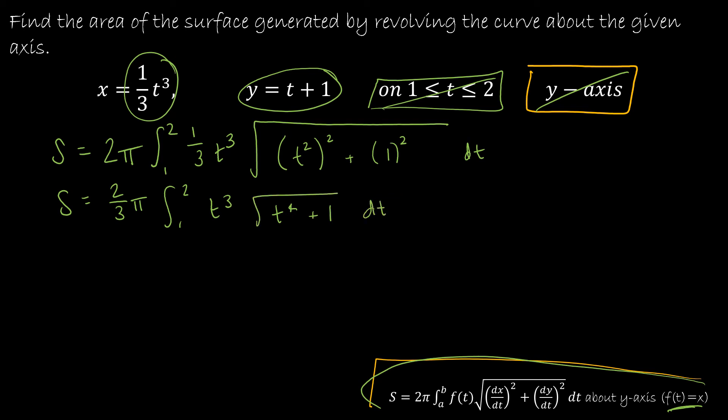Let's do some u substitution. So if u was t⁴ + 1, then du would be 4t³ dt. And so I know that I'm going to need a 4 here, which means I need a 1/4 on the outside in order to compensate for that.